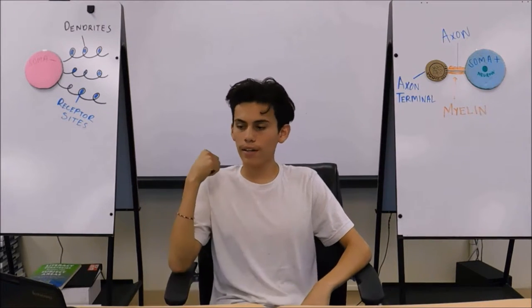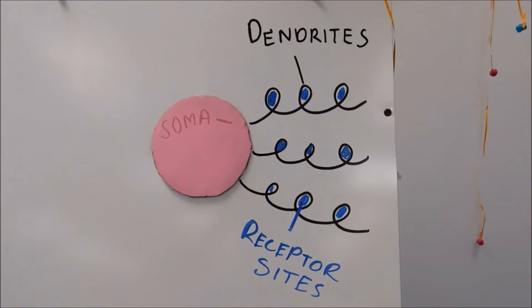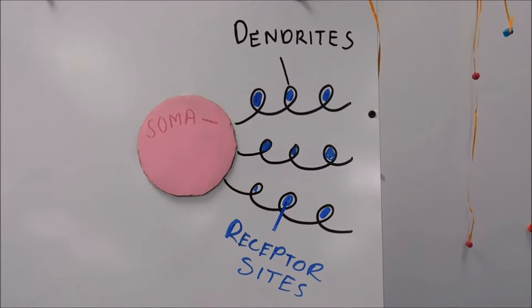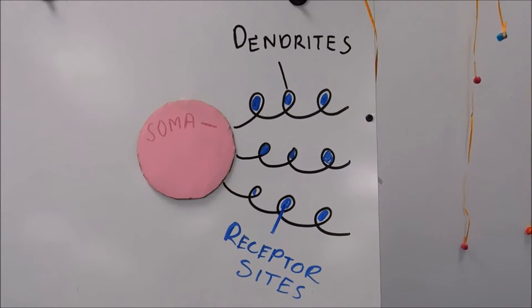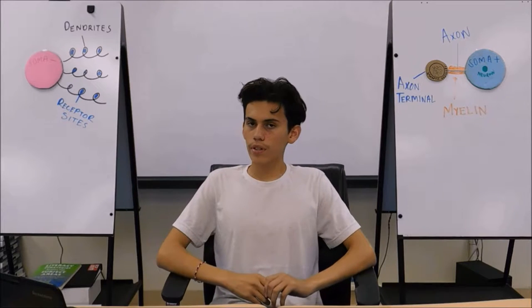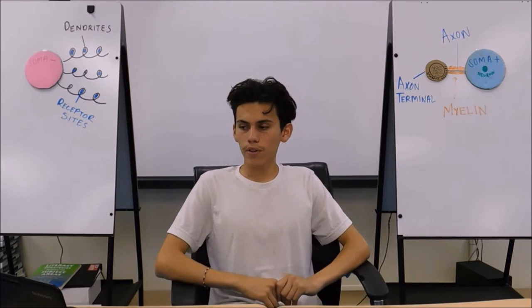Now turn your attention to soma negative. Attached to the soma, we have dendrites, and attached to the dendrites, we have receptor sites. Their job is to receive the neurotransmitter.